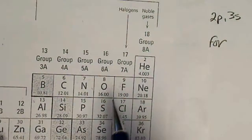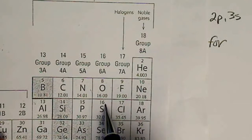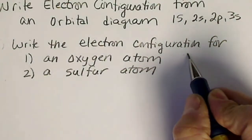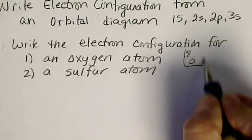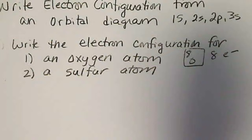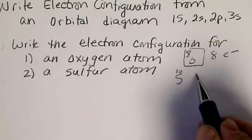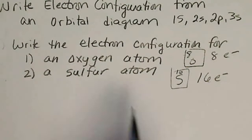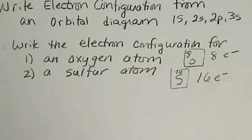Oxygen is element number 8, sulfur is element number 16, so oxygen has 8 electrons and sulfur has 16 electrons. We'll first do the orbital diagram for oxygen, then come back and do sulfur.